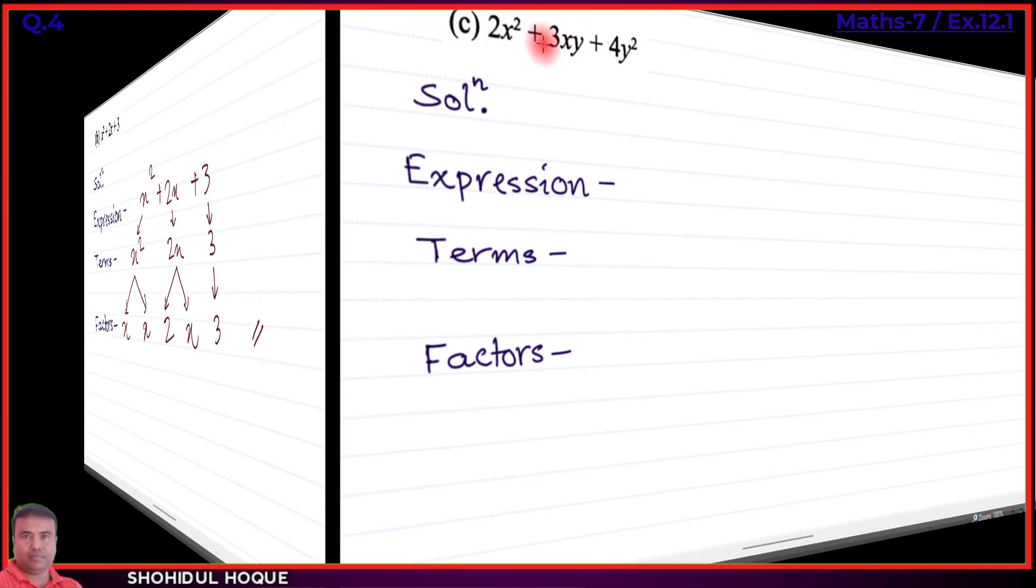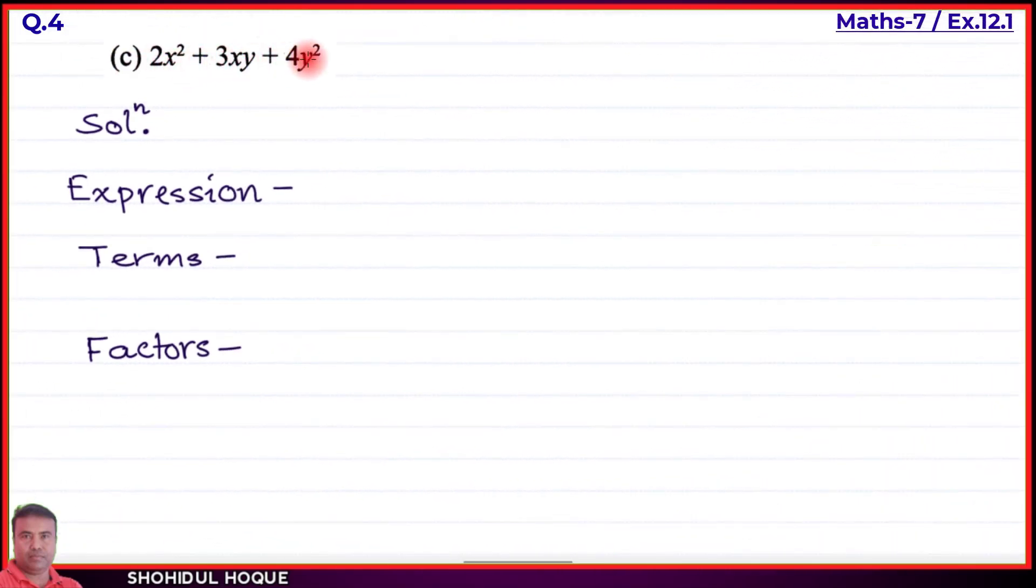Part (c): the expression is 2x² + 3xy + 4y². The terms are: first term 2x², second term 3xy, and third term 4y².